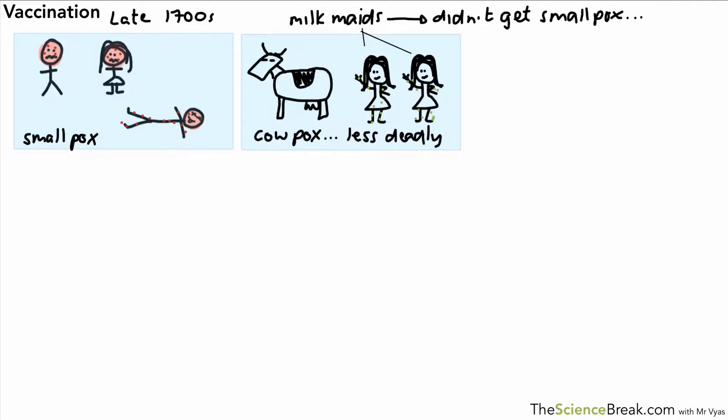This intrigued a country doctor who is now famous for doing this experiment. His name was Edward Jenner and he was curious as to whether catching cowpox had an effect on protecting from smallpox. So he decided to do an experiment.